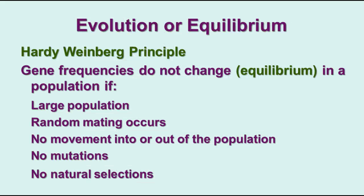This leads to the Hardy-Weinberg principle, which states that gene frequencies do not change in a population — it stays at equilibrium — as long as there is a large population, random mating occurs, there's no movement into or out of the population, no mutations, and no natural selection. However, this doesn't exist in nature, so gene frequencies do change over time. Populations are sometimes smaller, mating isn't truly random, immigration and emigration occur, mutations happen, and natural selection occurs. You can calculate these frequencies, which we won't do in this class, but you can read about it in Chapter 14.